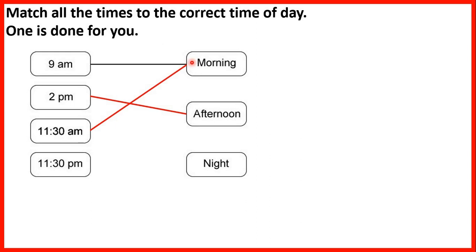11:30 am is in the morning because it's an am time, so before the 12 o'clock that's in the middle of the day. But 11:30 pm is at night. A pm time is after midday. And if it's 11:30 pm, that means it's almost midnight. A pm time is after midday, and if it's 11:30 pm, that will be at night time.